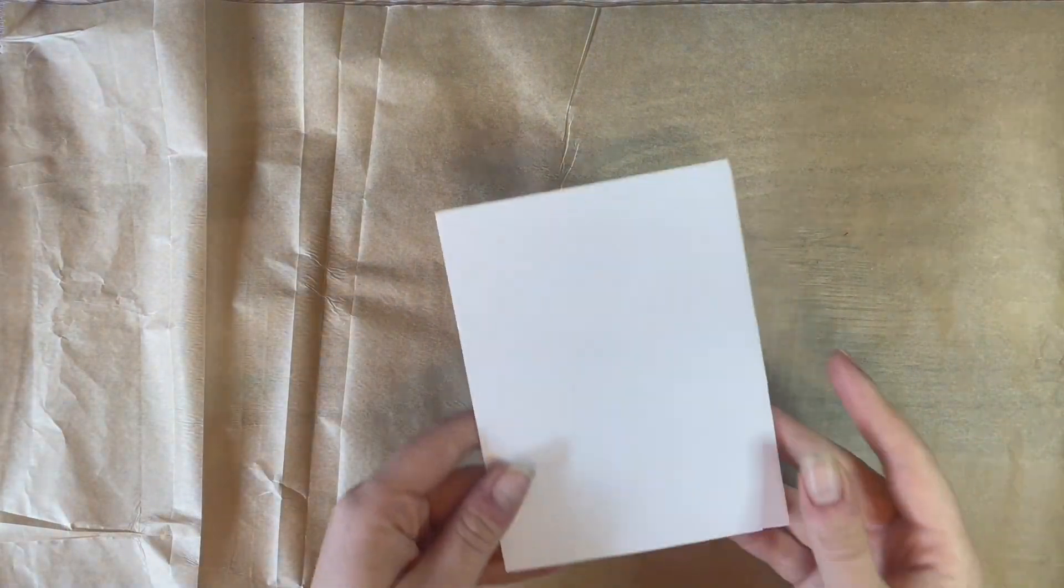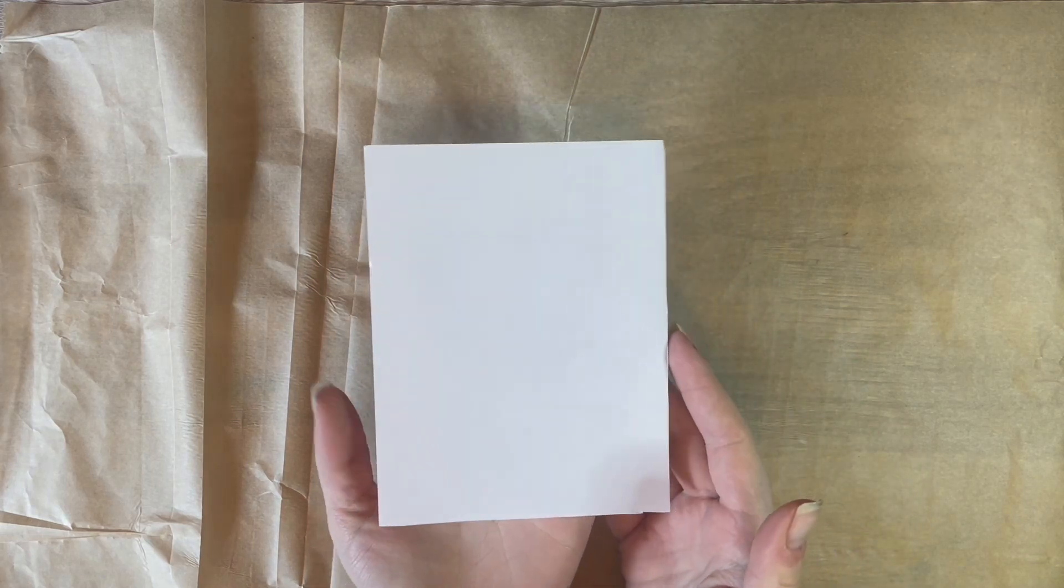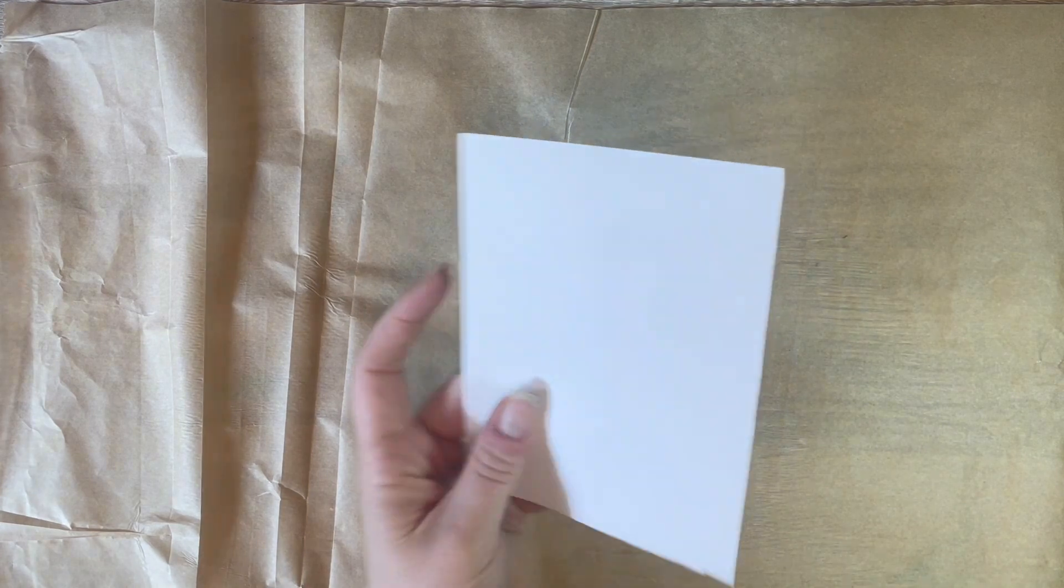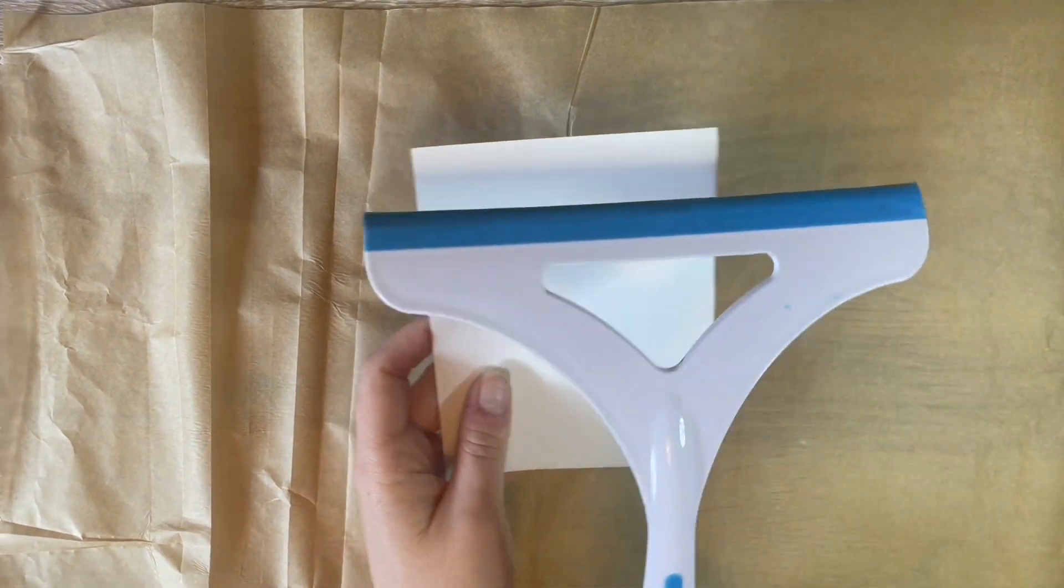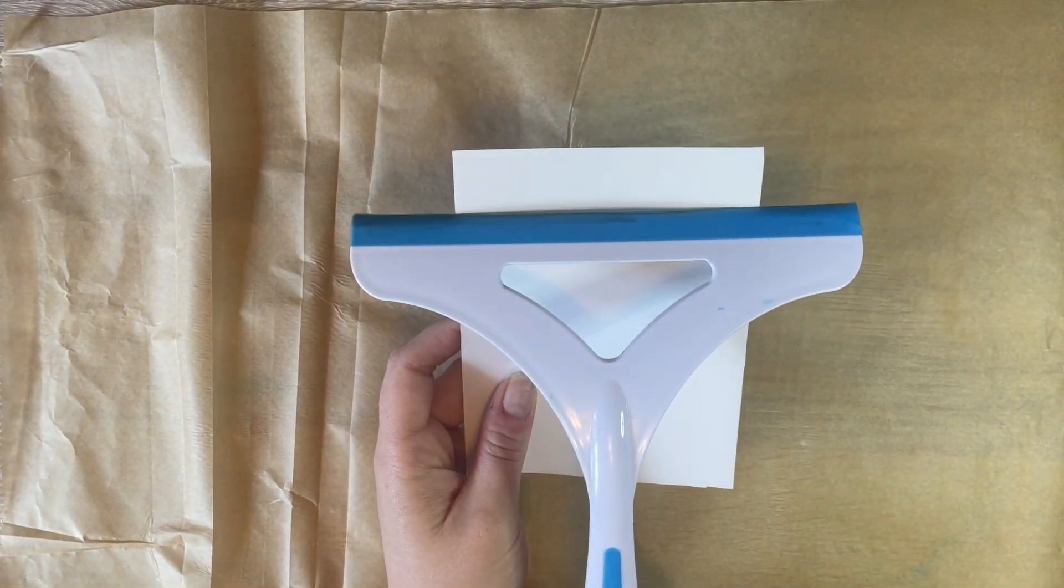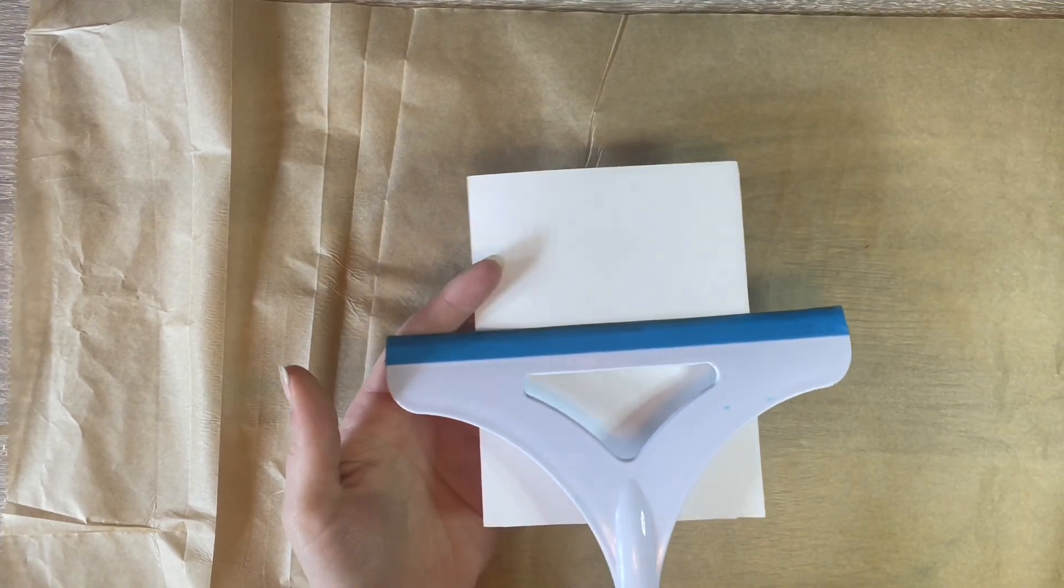Today we are making squeegee art. Let's go ahead and start off by protecting our work surface and picking out a piece of paper that we want to make art on. Here's my squeegee. My piece of paper is conveniently smaller, which does make life a little easier.